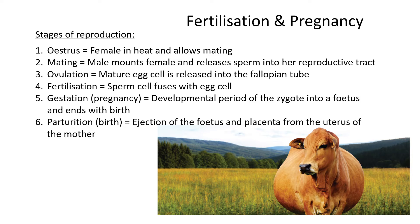Fourthly, you have the act of fertilization — that is when the sperm cell meets the egg cell and fuses with it. Fifthly is gestation, basically a fancy term for pregnancy. In animals we use the term gestation. Gestation is the developmental period of the zygote into a fetus, ending with birth. It progresses: zygote → blastocyst → embryo → fetus, and ends when the calf is born.